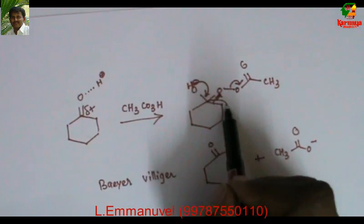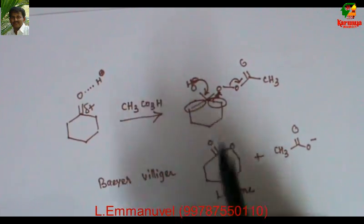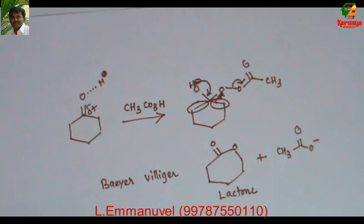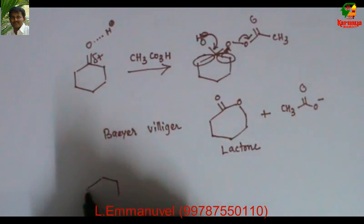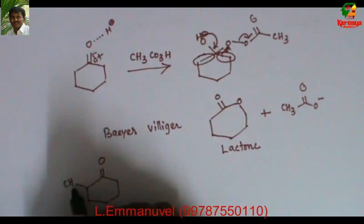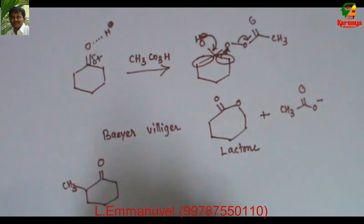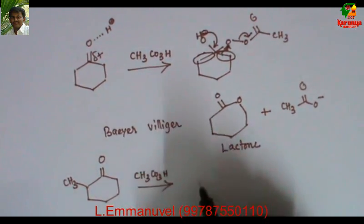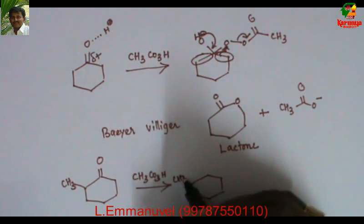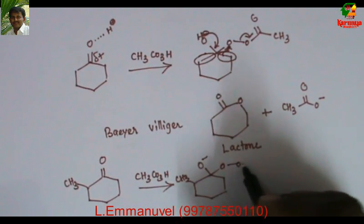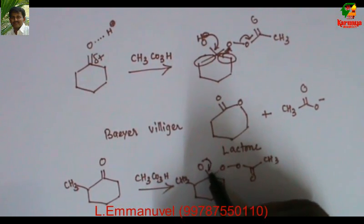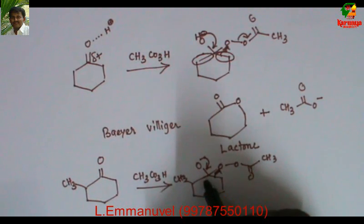In the simple cyclic case, the two carbons adjacent to the carbonyl are identical, so there is no question of which group will migrate — both are the same. But if they are different, for example a compound with a methyl group, and we add peracetic acid (you can also use meta-chloroperoxybenzoic acid, which follows the same mechanism), then the question arises: when the intermediate collapses, which carbon will migrate?